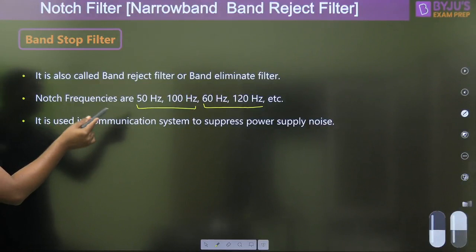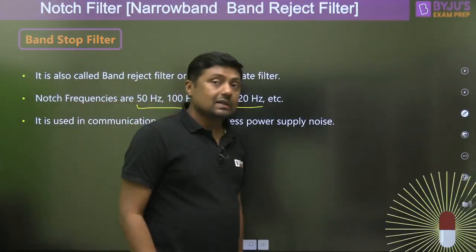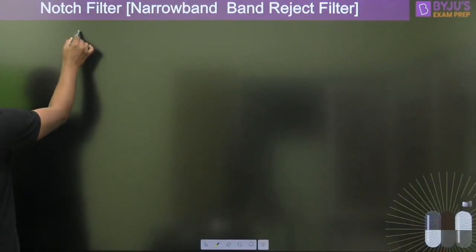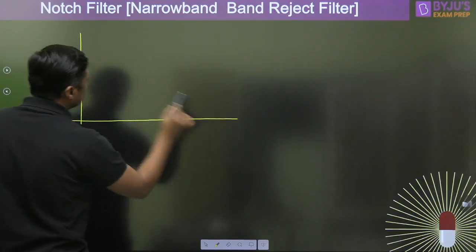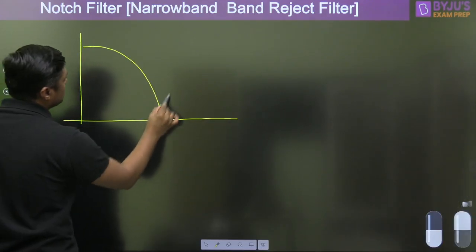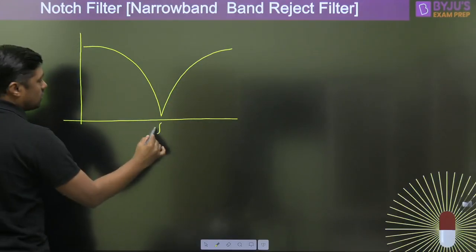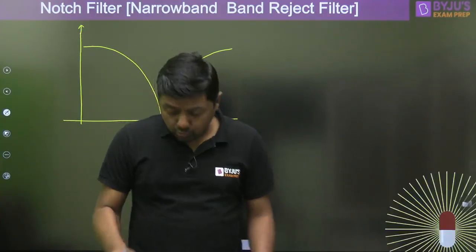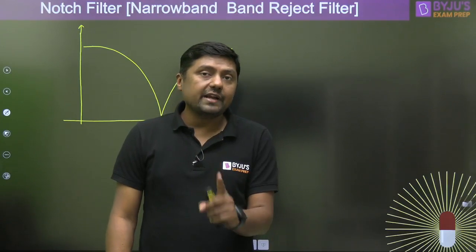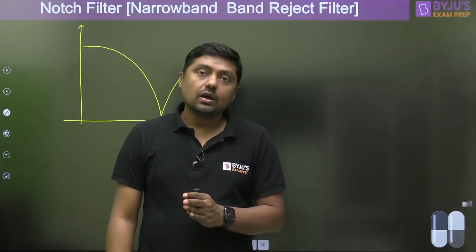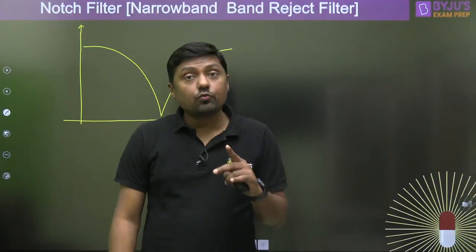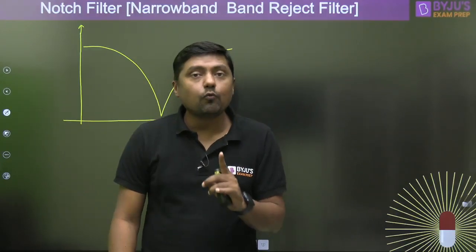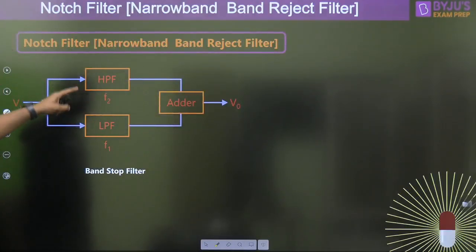The notch filter is used in communication systems to suppress power supply noise. Practically, the frequency response of the notch filter shows a sharp dip at the notch frequency. We can design this using a high pass filter and low pass filter connected in parallel with an adder — that is the block diagram: high pass filter, low pass filter, and adder.